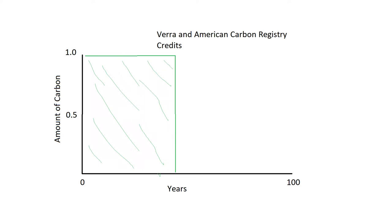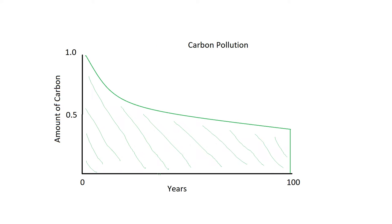Let's compare how this actually compares to what happens in real life when you put a ton of carbon into the atmosphere. When you put a ton of carbon into the atmosphere, it starts to decay right away — well, it doesn't actually decay; most of it is absorbed by the ocean. But the point is, by the time you've gotten out to 100 years, only about 40% of that carbon is left in the atmosphere.